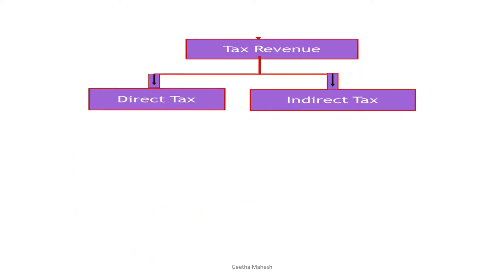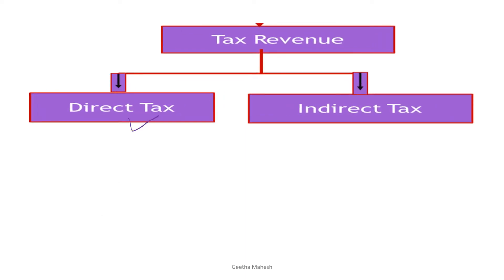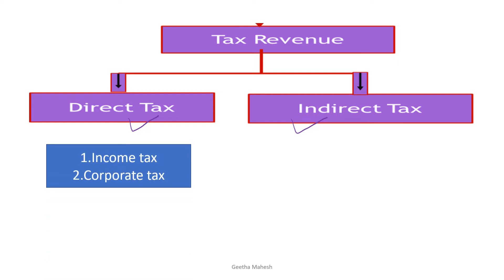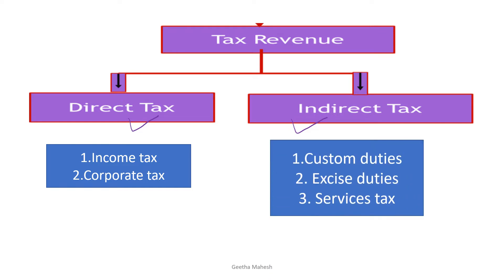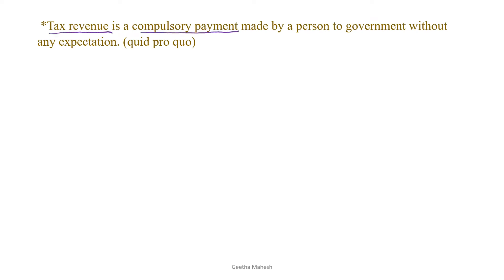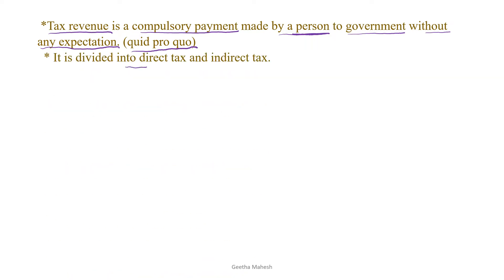Tax revenue is of two types: one is direct tax and another one is indirect tax. Good examples of direct tax are income tax and corporate tax. Good examples of indirect tax are custom duties, excise duties, and service taxes. Tax revenue is a compulsory payment made by a person to the government without any expectation — there is no quid pro quo, meaning there is no commercial or semi-commercial relationship between the taxpayer and the government.